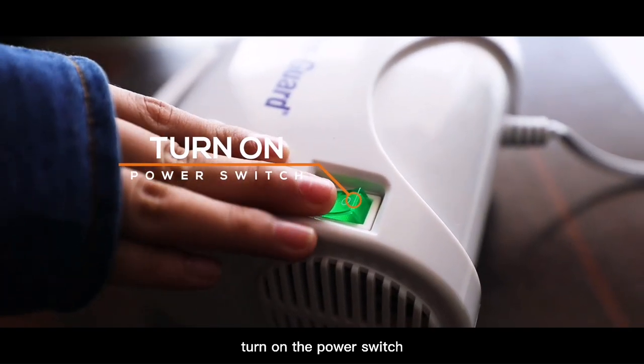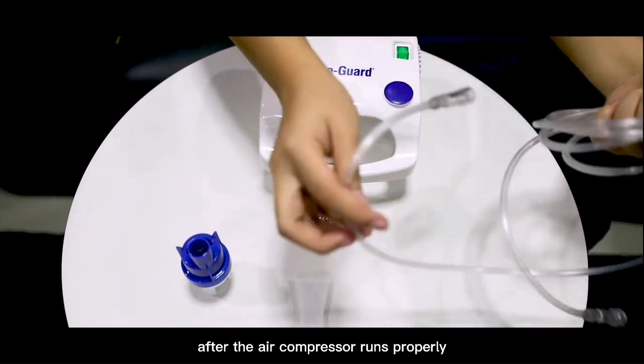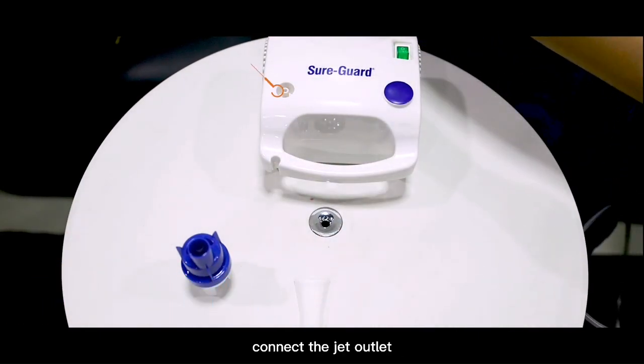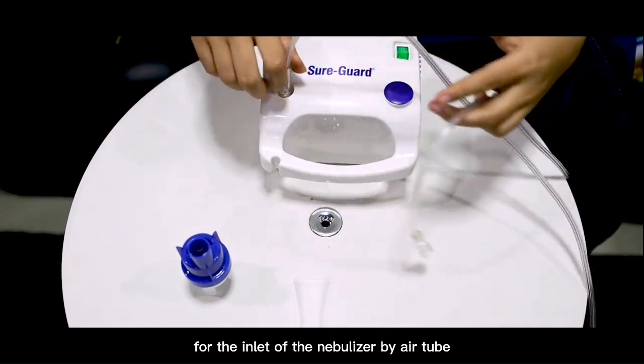Turn on the power switch. After the air compressor runs properly for 1 to 2 minutes, connect the jet outlet of the air compressor to the inlet of the nebulizer by air tube.